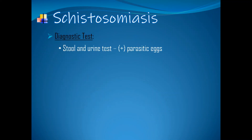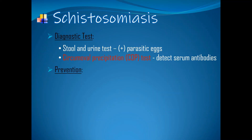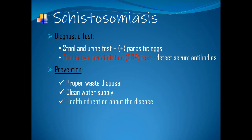Diagnostic tests: stool and urine tests will show the presence of parasitic eggs in the specimen. COPT test — the confirmatory test — is a serologic test used to detect serum antibodies. Prevention: proper waste disposal, clean water supply, and health education about the disease.